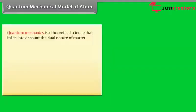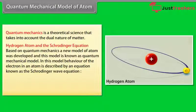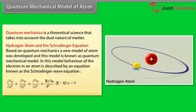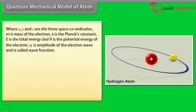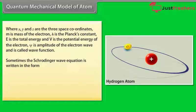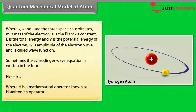Quantum Mechanical Model of Atom: Quantum mechanics is a theoretical science that takes into account the dual nature of matter. Based on quantum mechanics, a new model of atom was developed known as the Quantum Mechanical Model. In this model, the behavior of the electron in an atom is described by the Schrödinger Wave Equation, where x, y, and z are the three space coordinates, m is the mass of the electron, h is Planck's constant, E is the total energy, and V is the potential energy of the electron. Xi is the amplitude of the electron wave and is called the wave function. Sometimes the Schrödinger Wave Equation is written as H·Xi = E·Xi, where H is a mathematical operator known as the Hamiltonian operator.